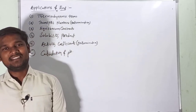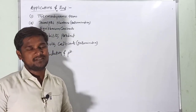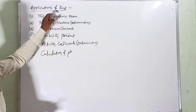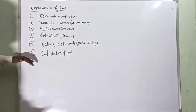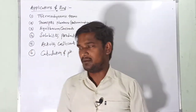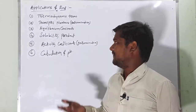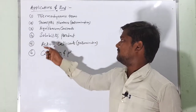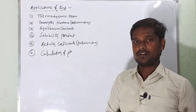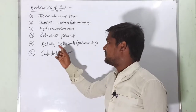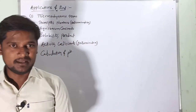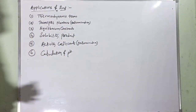Hi guys, welcome to RPV Resonance Chemistry. Let's continue our lectures on electrochemistry. Today we are going to deal with one of the applications of EMF value, that is electrode potential value. There are six applications: thermodynamic terms, determination of transport number, equilibrium constant, solubility product, activity coefficient, and calculation of pH.